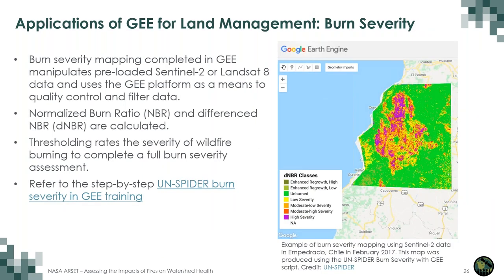For part of this training, we will be using Google Earth Engine for burn severity mapping with Landsat data. We will calculate the Normalized Burn Ratio and the Differenced Normalized Burn Ratio, utilizing thresholding values to identify categories of burn severity and map them within the interface. Portions of the code we will work through are from the United Nations SPIDER program, which provides an example of burn severity mapping in Chile in 2017. This code is publicly available and flexible to use in different regions throughout the world.